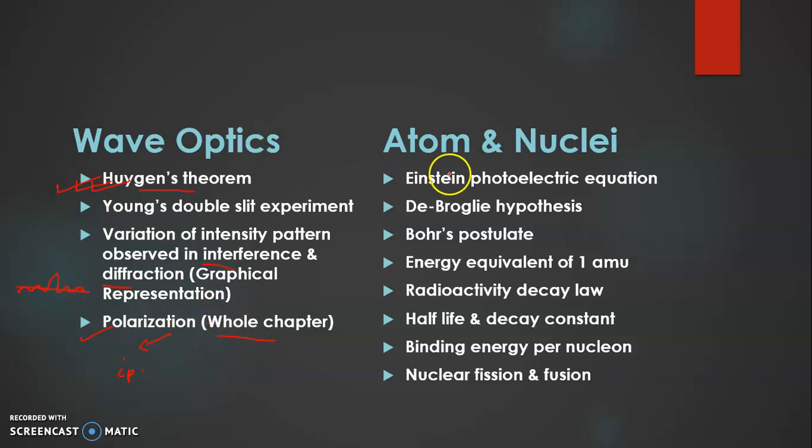Next is atom and nuclei. Under this, Einstein photoelectric equation numerical, de Broglie hypothesis, Bohr's postulate, energy equivalent of 1 amu, radioactivity decay law half life and decay constant how to derive and numerical, then binding energy per nucleon that graph please see the characteristics, and finally nuclear fission and fusion its definition its equation and fusion reactions, why fusion reactions, its energy, everything under it. It's a small topic so go through it so if there is any question you can easily attempt it and this part is easy to attempt.